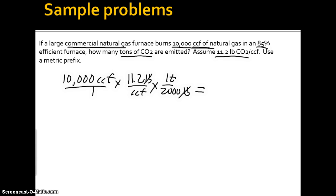So now we get pounds cancel out of pounds, CCF, CCF. So we're left with tons, so we're going to take 10 divided by 2 times 11.2. So this is going to give us 56 tons of CO2. Again, we don't need to worry about a metric prefix because we don't have that many. So I'm going to add a little wrinkle here.